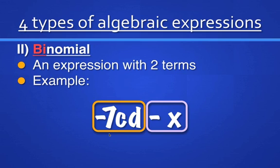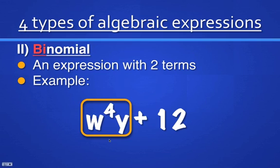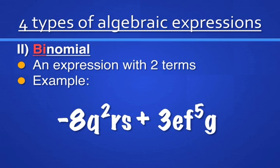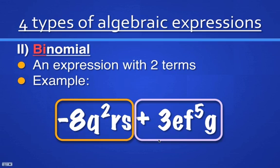You're going to hear me say negative x or minus x, or negative 7 and minus 7 — keep in mind that algebraically, negative and minus mean the same thing, so they're interchangeable. So we have negative 7cd and negative x as our two terms. In another example, our first term is w to the fourth y and our second term is 12. In another example with longer terms, we separate by addition: the first term is negative 8q squared rs, and the second term is positive 3ef to the fifth g. Don't get intimidated by a lot of variables.